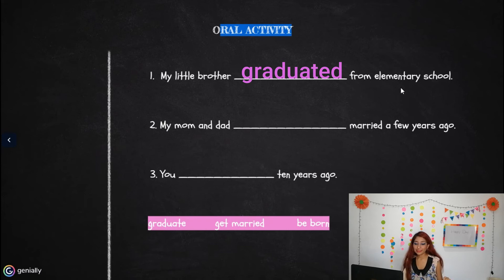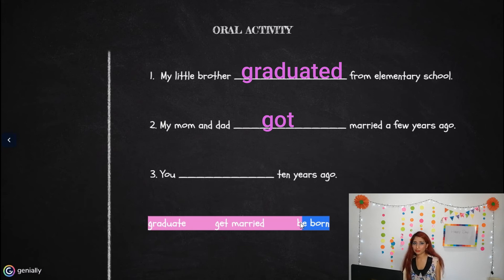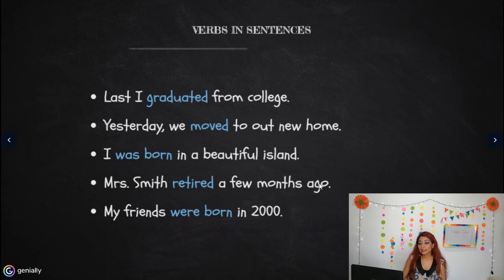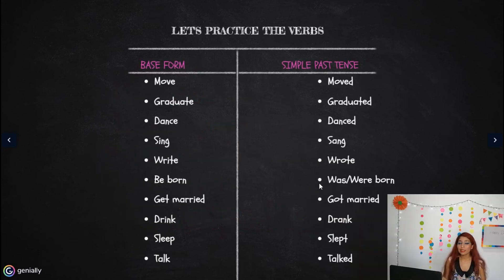Number two: 'My mom and dad blank married a few years ago.' The correct answer is: 'My mom and dad got married a few years ago.' Number three: 'You blank 10 years ago.' Only 'be born' is left. The correct answer is: 'You were born 10 years ago.' Remember, 'you' always uses 'were' in the simple past. If you have questions about these verbs, practice them and ask me. Study these verbs — they will help you on the exam.